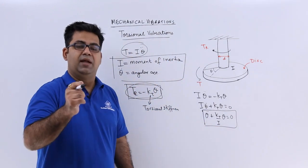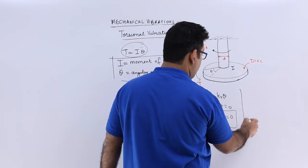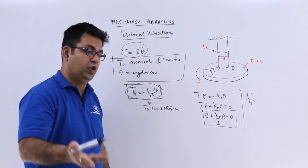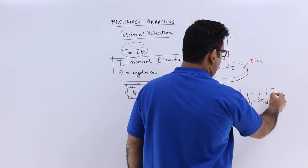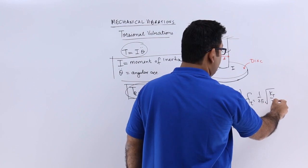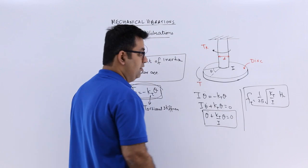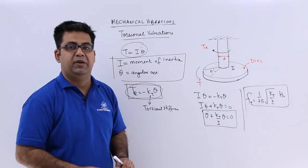So the natural frequency of the frequency of the torsional vibration would then become FT. Let's put T for torsional. And this would become 1 by 2 pi into under root KT upon I hertz. So this is the mathematical formula to calculate the torsional frequency in torsional vibrations.